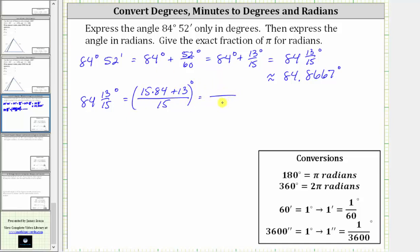In the denominator, we have 15. In the numerator, 15 times 84 is equal to 1260, and then we have plus 13, which gives us 1273. So now we know the angle can also be expressed as 1273/15ths degrees.